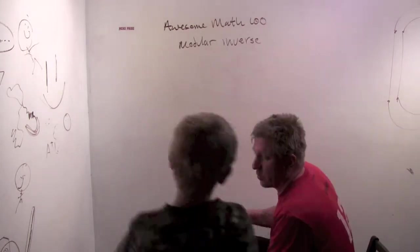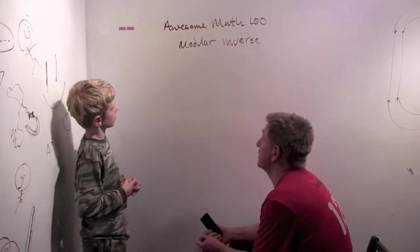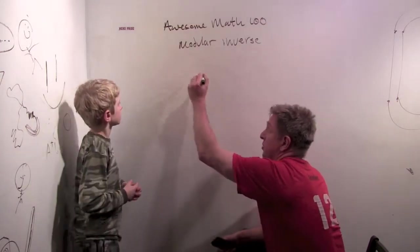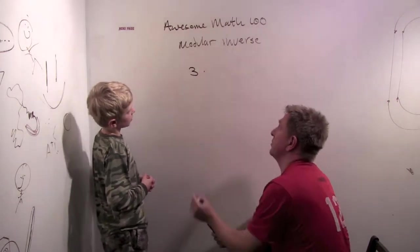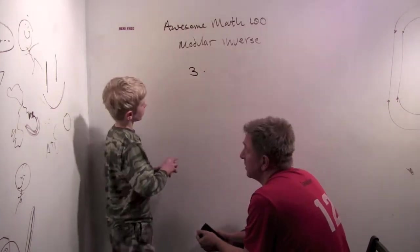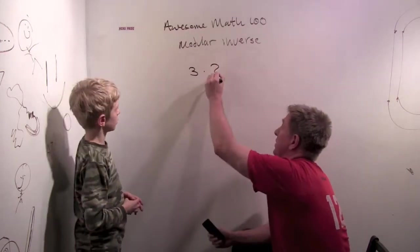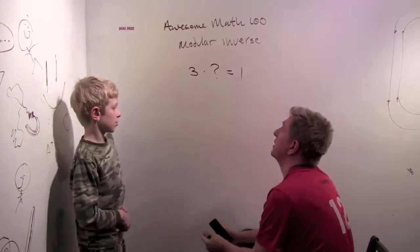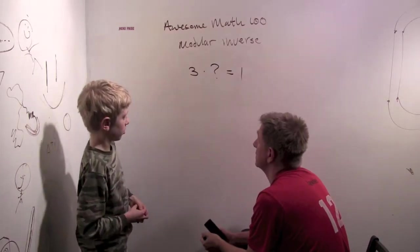So we know what an inverse means when you multiply. Yeah. So what is, in normal arithmetic, what does the inverse of three mean, the multiplicative inverse? Well, then it's three times something would equal one. And that number would be one-third.